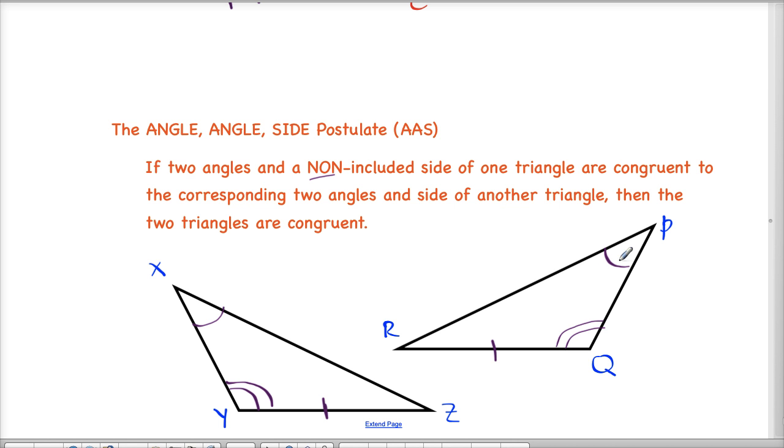So it's either going to be angle, angle, side, or angle, side, angle, which is our previous postulate. So if you have two angles and a side, it really doesn't matter where that side is. It'll tell you that it's congruent. The only thing that matters is where the side is as to which postulate you'll use.